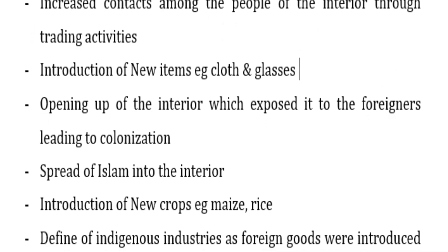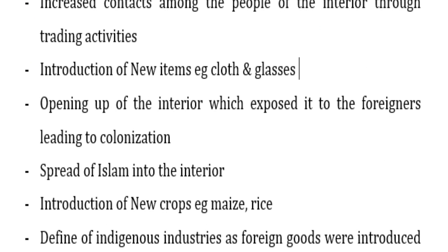Number two: introduction of new items such as clothes and glasses. Number three: it led to opening of the interior, which exposed it to foreigners. Number four: it led to colonization, as foreigners came to know about East Africa. Number five: it led to the spread of Islam into the interior. Number six: introduction of new crops like maize and rice.